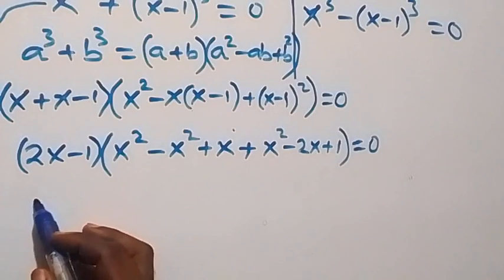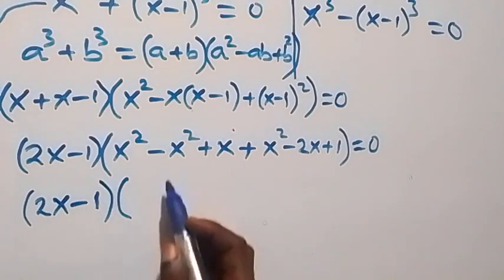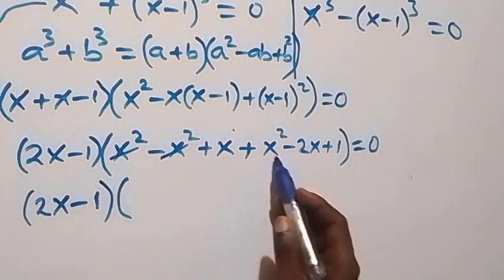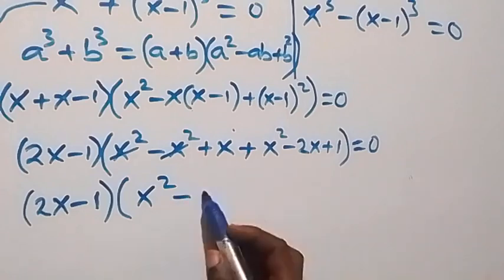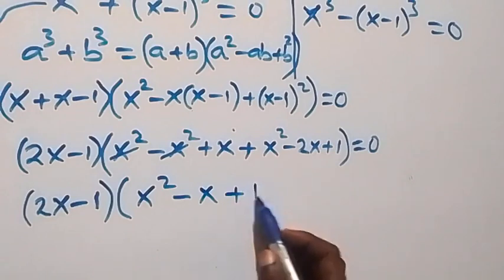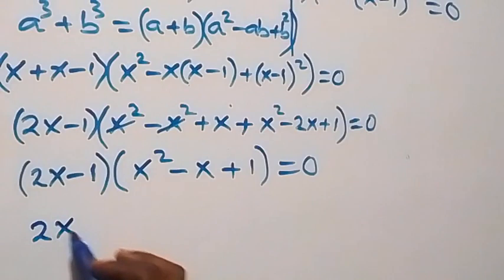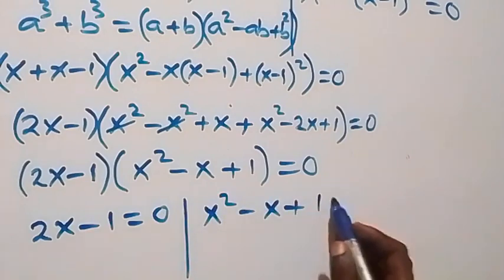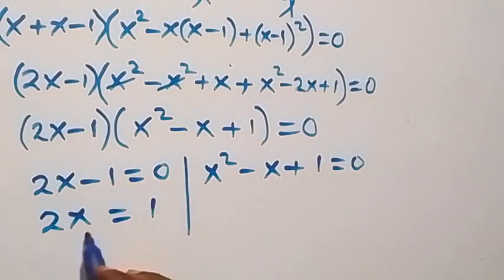Simplifying the second bracket: the x² terms cancel, leaving x² − x + 1. So we have (2x − 1)(x² − x + 1) = 0. This gives two cases: either 2x − 1 = 0, which gives x = 1/2, or x² − x + 1 = 0.